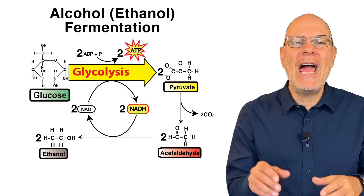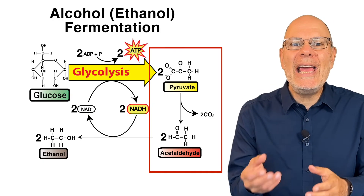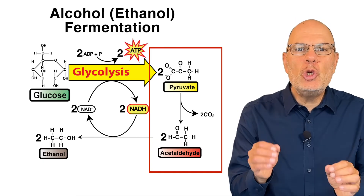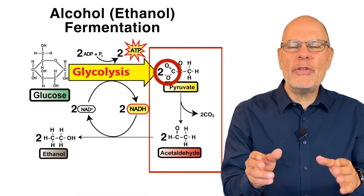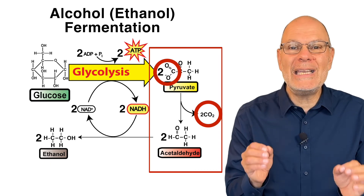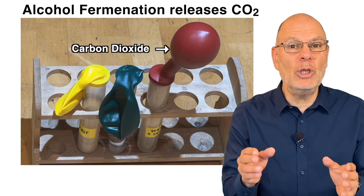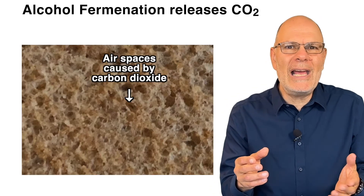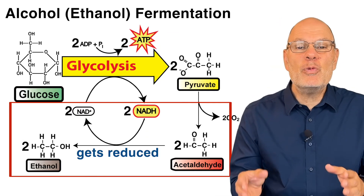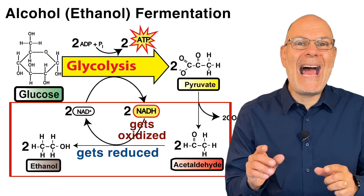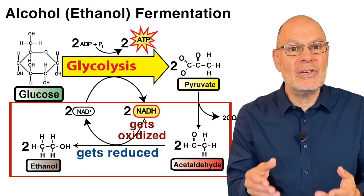Like lactic acid fermentation, alcohol fermentation starts with glycolysis. After glycolysis, enzymes convert pyruvic acid into a two-carbon molecule called acetaldehyde. During that process, enzymes break off the carboxyl group at the end of pyruvate, releasing a molecule of CO2. That CO2 is the gas that caused the balloon in our experiment to inflate — it's also the gas that causes bread to rise, or which makes up the bubbles in beer. In the next step, enzymes reduce acetaldehyde as they oxidize NADH to NAD+, setting up conditions that allow glycolysis to continue.